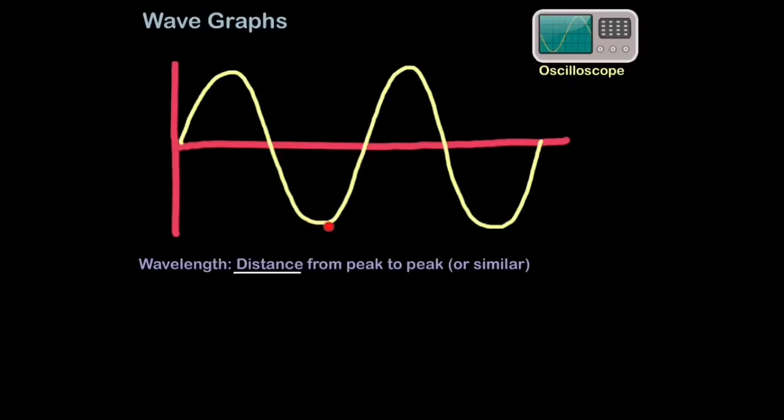This point is the peak of a wave. This is the trough of a wave. Sometimes we call the peak the crest of a wave. So a surfer would surf on the crest of the wave. And one wavelength would be the distance from here to here.